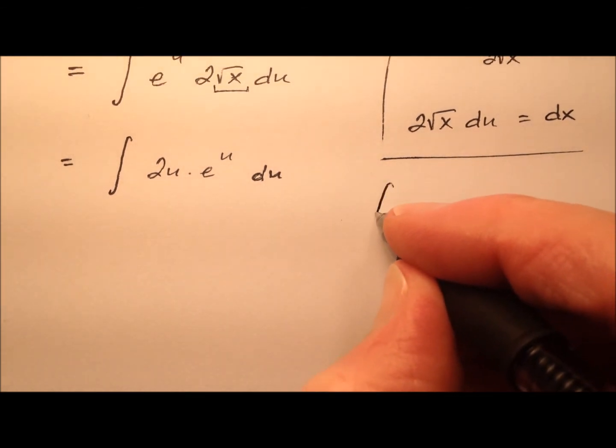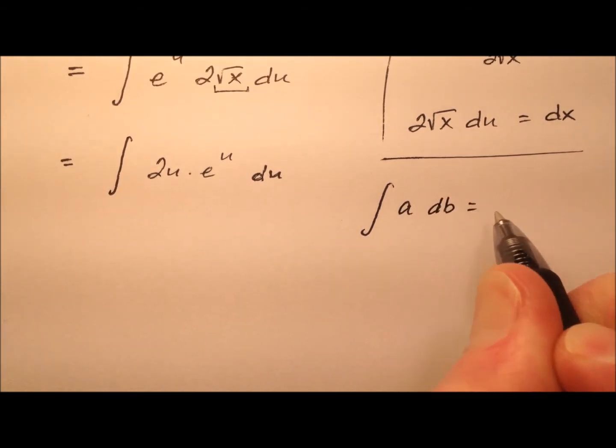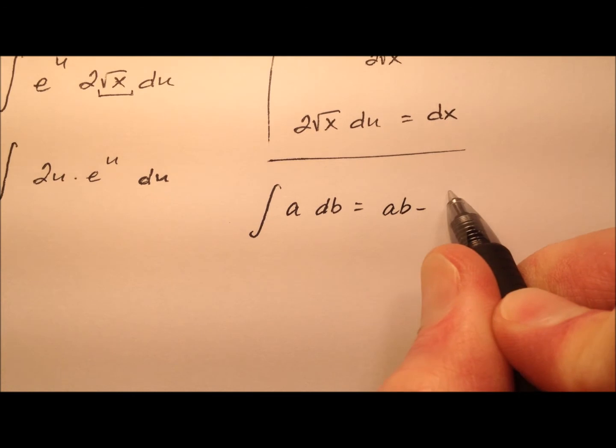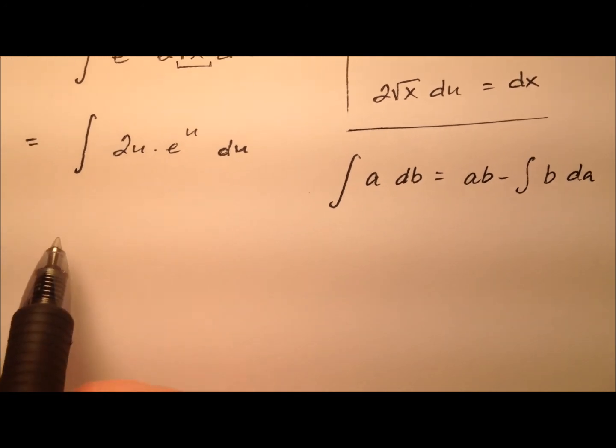And so the integration by parts says the integral of a db equals ab minus the integral of b da. Okay, so we just kind of do this switch thing. So when we do this, let's look for an a and a db.